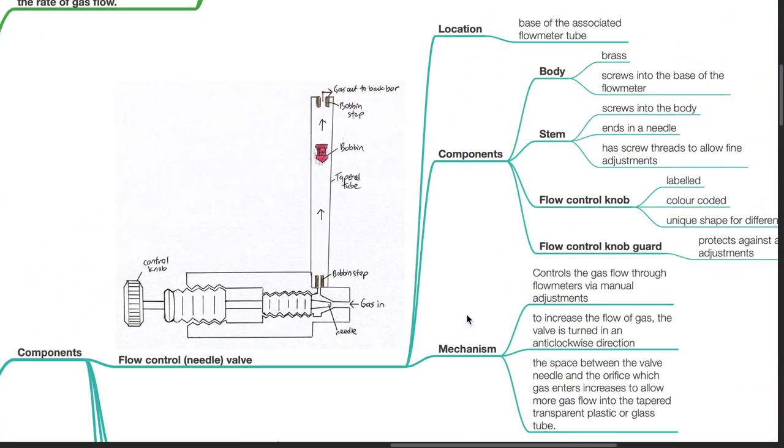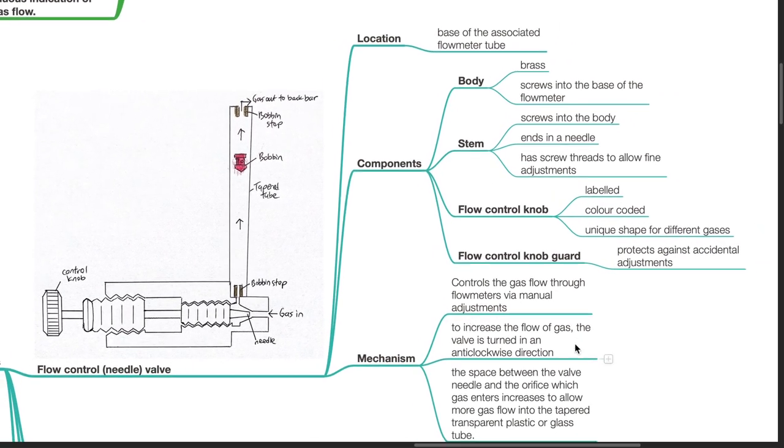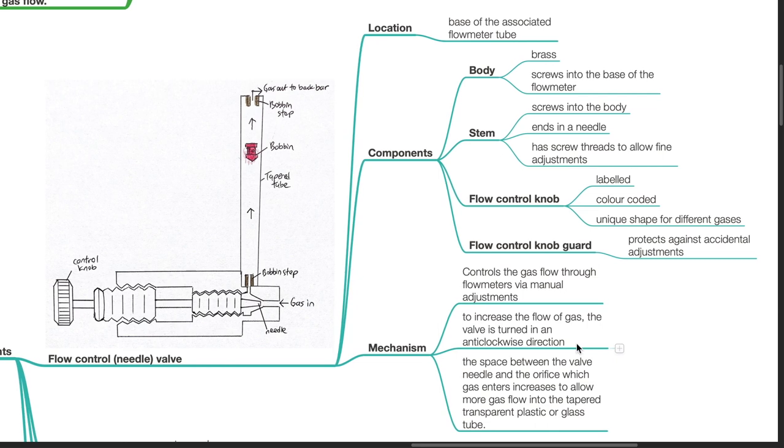Components: Flow control needle valve. Location: It is located at the base of the associated flow meter tube.